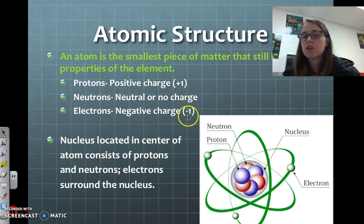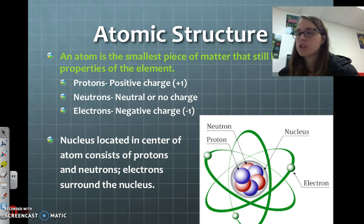And then we have electrons, which are negatively charged, and they rotate around the nucleus, depending on which theory you're looking at, it might be in orbitals or clouds. The nucleus is located in the center of the atom and consists of protons and neutrons. Electrons surround the nucleus.